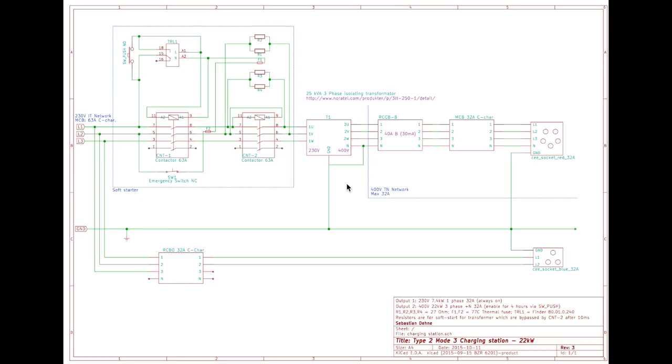This is the schematic that I've drawn in KiCad which represents the entire charging station. So in the middle here you have the transformer which is converting from 230 volts to 400 volts. And down here I also have drawn in a single-phase 230 volt output socket which is always on. It's basically not part of this 400 volt charging station, but it's the slow charging part. But anyway, let's focus on the 400 volt charger.